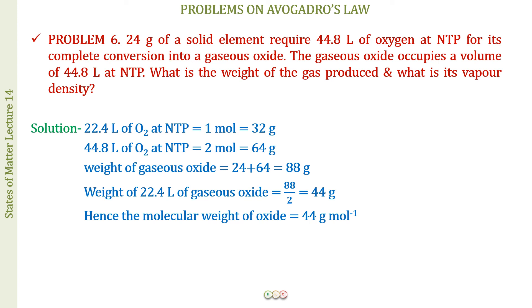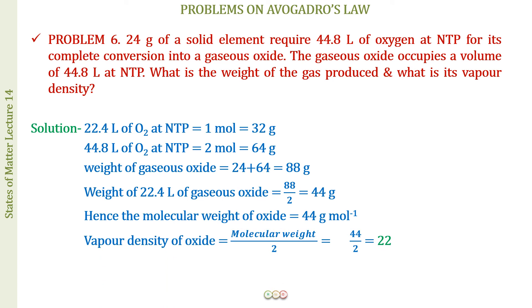To find vapor density: vapor density = molecular weight / 2 = 44 / 2 = 22. Essentially, you only need to apply that the molar volume of any gas at NTP is 22.4 liters, or that equal moles means equal volumes — keep applying those concepts.